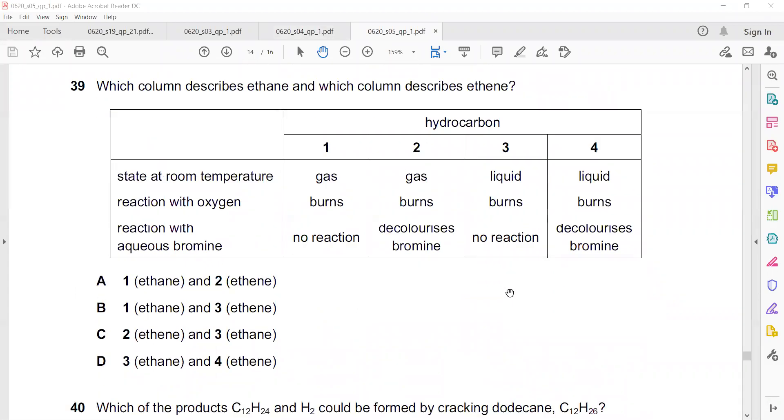Question 39. Which column describes ethane and which column describes ethene? So at room temperature, both are gases. Both can burn. But if we add bromine, it will decolorize. So both are gases. Ethane is a gas, ethene is also a gas. The first four members of both series are in a gaseous state, then liquid, and then wax-like solid. So one is ethane and two is ethene.